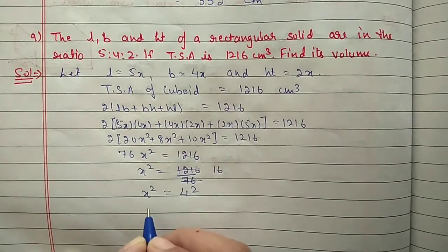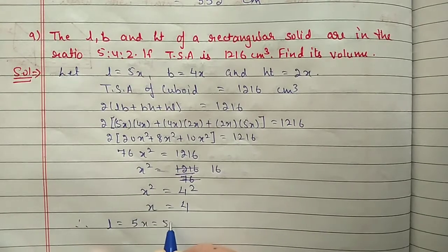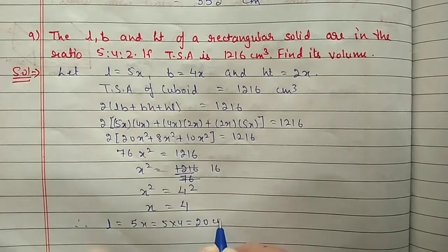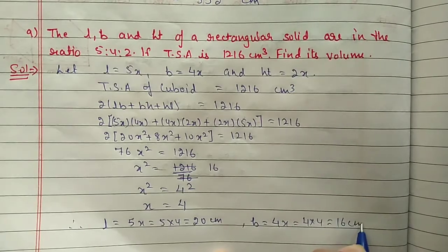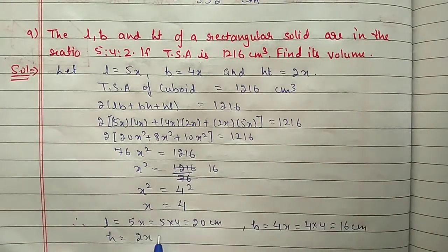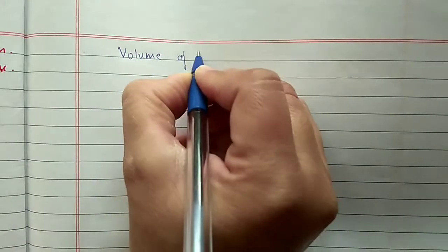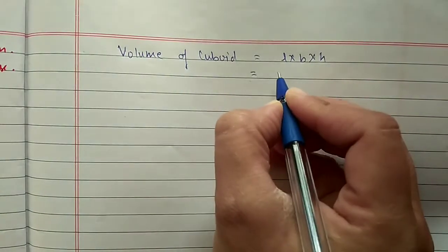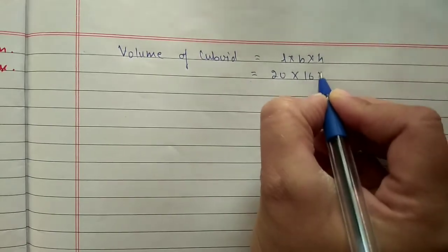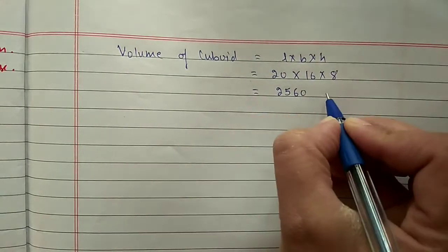Therefore length is 5x = 5 into 4 = 20 cm, breadth is 4x = 4 into 4 = 16 cm, and height is 2x = 2 into 4 = 8 cm. Now we find the volume: volume equals length into breadth into height = 20 into 16 into 8. After multiplication we get 2560 cm³.